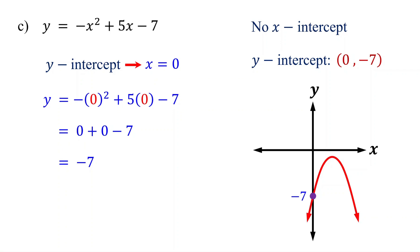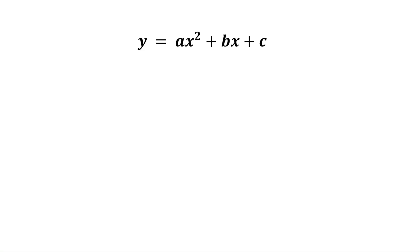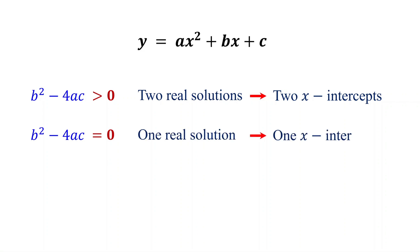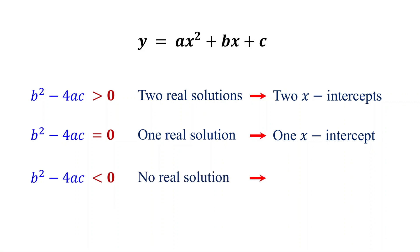Now let's briefly discuss the relationship between the discriminant, the solutions, and the x-intercepts. In general, if the discriminant of a quadratic is greater than 0, the quadratic has two real solutions, which means the parabola has two x-intercepts and crosses the x-axis twice. If the discriminant equals 0, the quadratic has one real solution, meaning the parabola has only one x-intercept and touches the x-axis once. If the discriminant is less than 0, the quadratic has no real solution and the parabola has no x-intercept — it does not cross the x-axis. A parabola has only one y-intercept, and that is always the constant term.